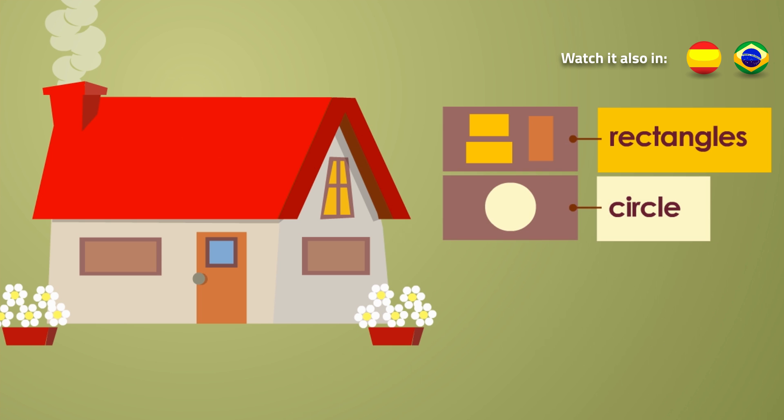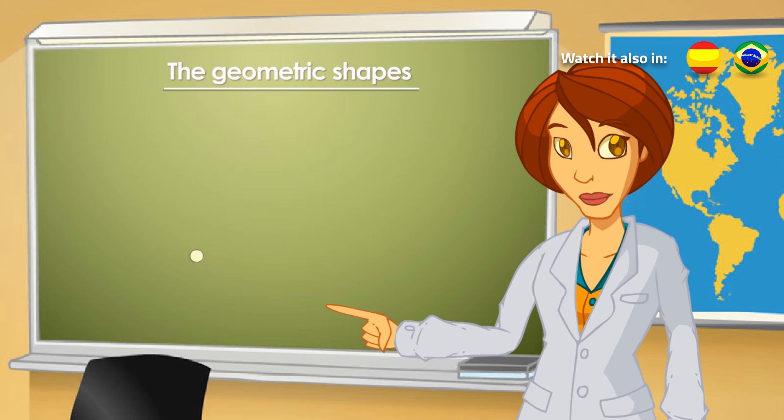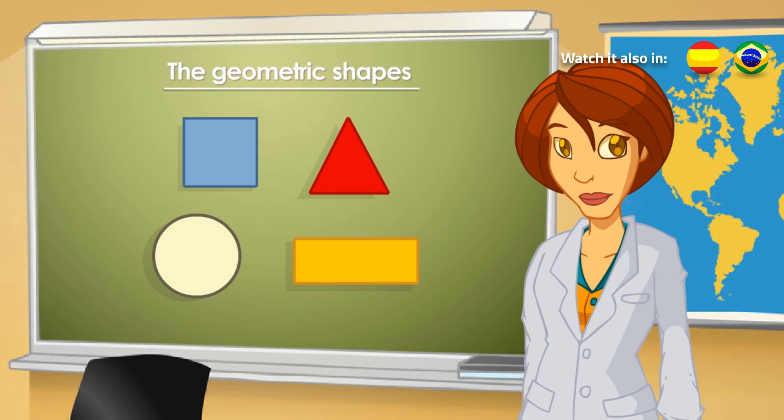Now there's only the square left. Where can you find a square? The window? I think you can now recognize the geometric shapes. Why don't you draw something with them?